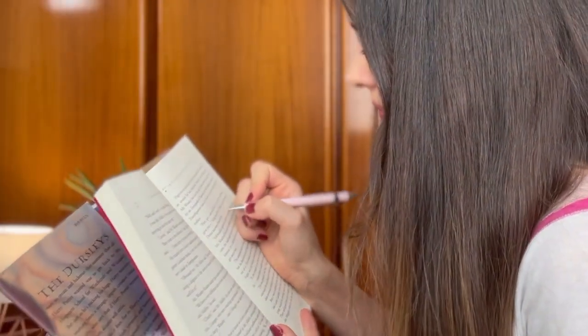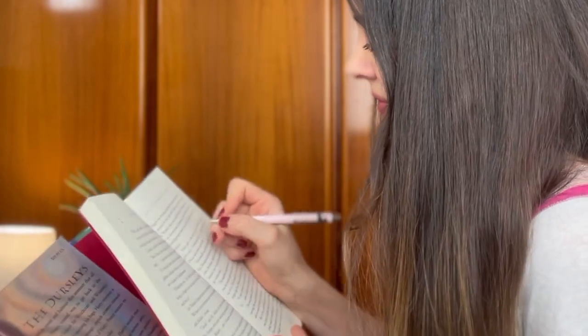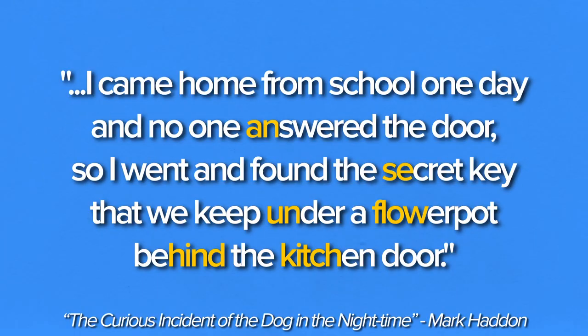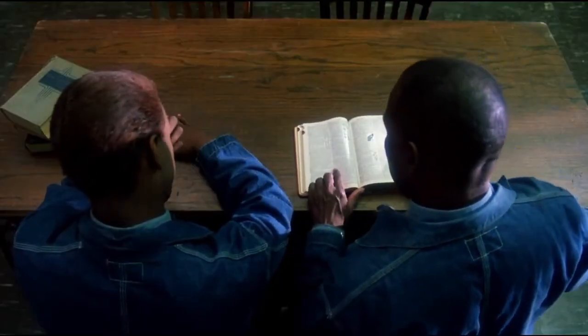Wrong word stress is one of the most common pronunciation mistakes people make — not surprising considering how random word stress is in English. Here's what you can do: grab an English book or article and pick a single paragraph. Look out for words with multiple syllables and mark the word stress in all of them. For example, from The Curious Incident of the Dog in the Night-Time: "I came home from school one day and no one answered the door, so I went and found the secret key that we keep under a flower pot behind the kitchen door." After marking the word stress on your own, check your dictionary to see if you got each word right. Then read each multisyllabic word out loud, exaggerating the stress. Finally, read the entire passage out loud while keeping proper word stress in mind.